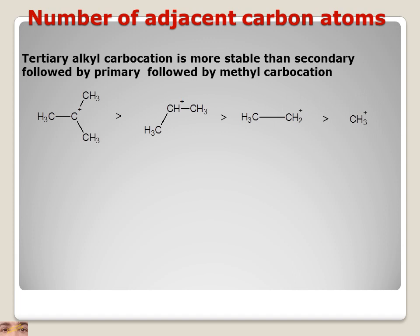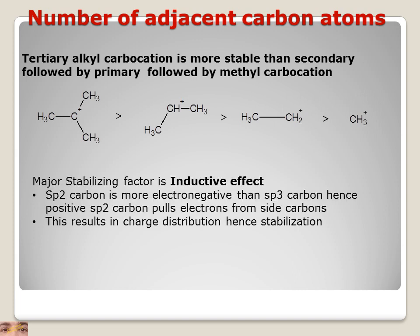The central carbon atom with a positive charge is sp2 hybridized. sp2 has more s-character, so it is more electronegative, and has a tendency to pull electrons from the adjacent carbons. By pulling electrons, the positive charge is partially neutralized, and some partial positive charge is induced on the adjacent carbons. More induction on the side carbons means more charge distribution and more stabilization. This effect is called the inductive effect, which increases with chain length as well as with more substituted carbons.